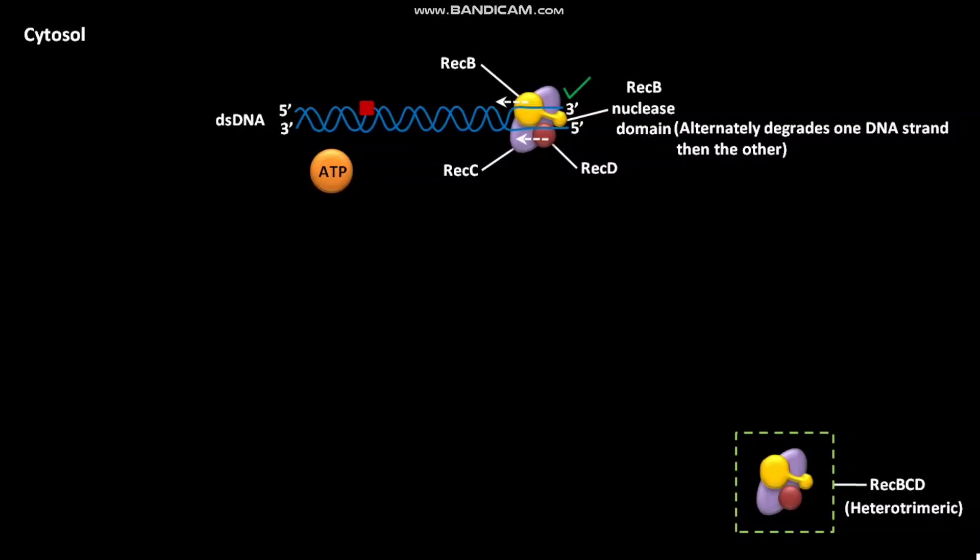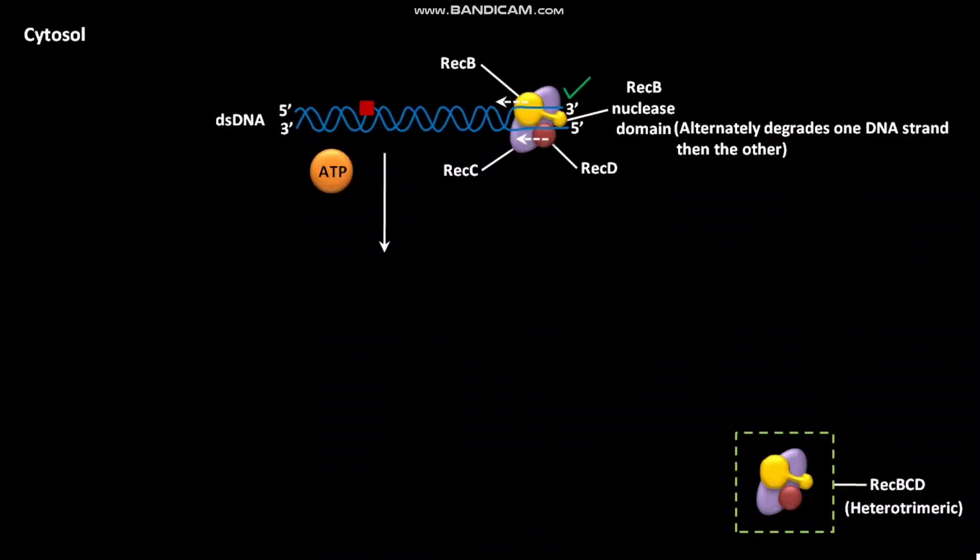The helicase activity of both REC-B subunit and REC-D subunit depends on biochemical reactions in which ATP molecules undergo hydrolysis to produce ADPs and PIs. Overall, we can say that for the nuclease and helicase activity of REC-BCD enzyme, ATP molecules undergo hydrolysis to produce ADPs and PIs.